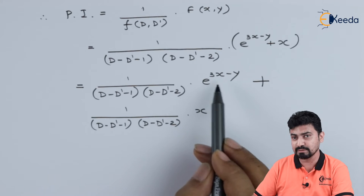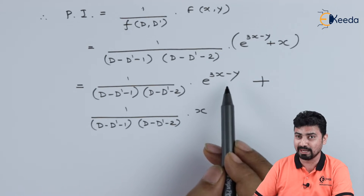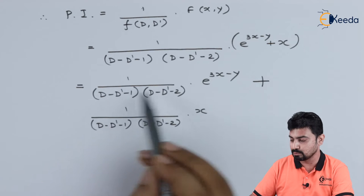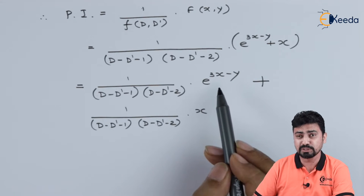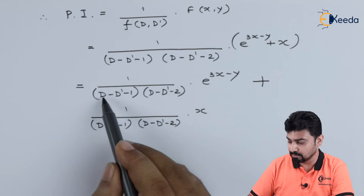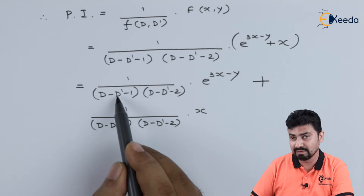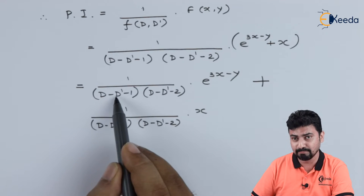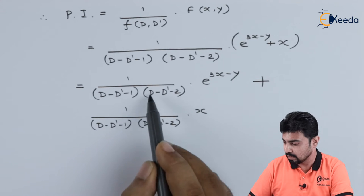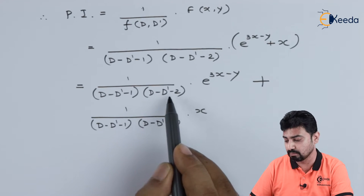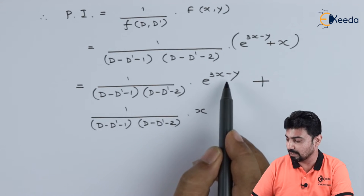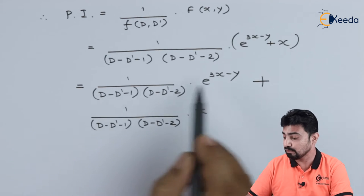There are different rules for both terms. For e^(3x − y), which is of the form e^(ax + by), we directly substitute D = a and D' = b — here D = 3 and D' = −1. We substitute and check if the denominator is non-zero: putting 3 for D and −1 for D' gives (3+1−1)(3+1−2) = (3)(2) = 6, a non-zero term. So we can directly substitute.